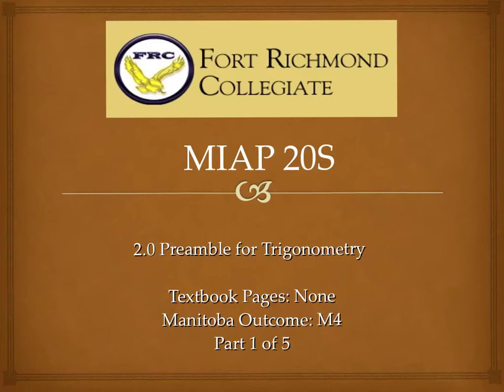Hi, welcome to the MEAP20S videos. In this video I'm going to talk about the pre-stuff that you need to know for the trigonometry unit for chapter 2. So we're calling it 2.0 preamble for trigonometry. It's not exactly found in the textbook because it's what you already need to know. Manitoba outcome M4. And there's going to be a total of five videos for this chapter.